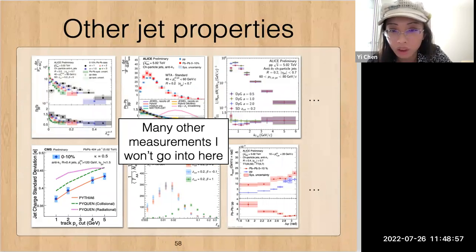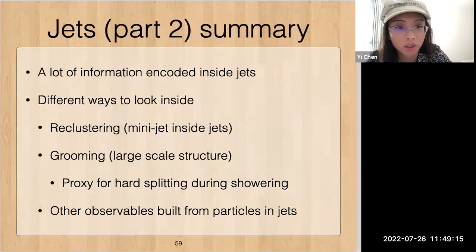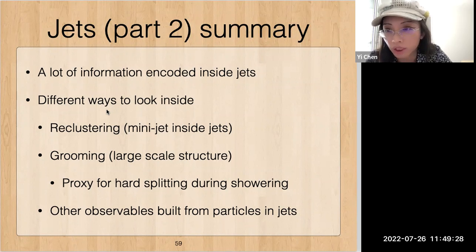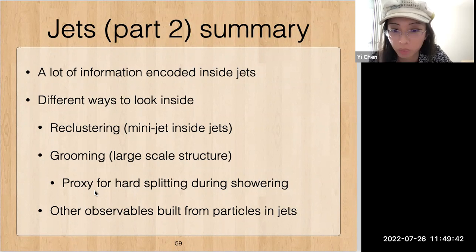There are also many other measurements I don't have time to cover here — angularity, acoplanarity, dynamical grooming, hardest kT splitting, jet charge, and so on. As a summary of part two of jets: there is a lot of information encoded inside jets. There are many different ways to look inside to gain more information — those include reclustering (mini-jets inside jets), jet grooming to look at the large-scale structure of the jets, which in some cases can be proxy for what happens during the showering, and many other observables.